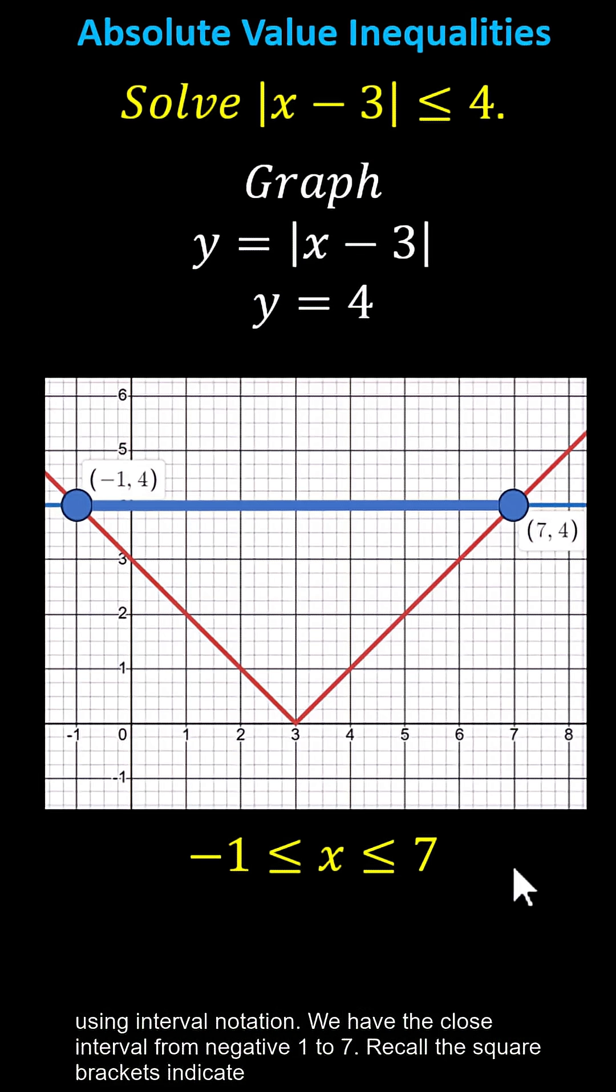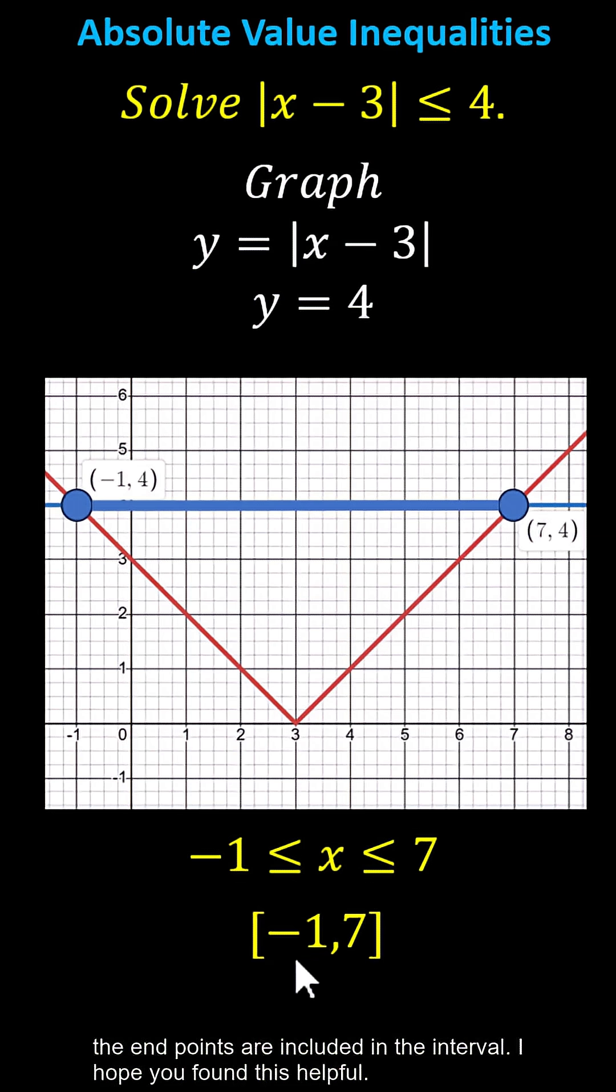Using interval notation, we have the closed interval from negative 1 to 7. Recall the square brackets indicate the endpoints are included in the interval. I hope you found this helpful.